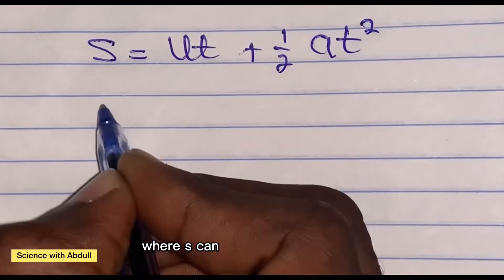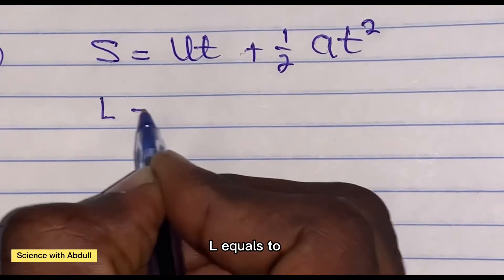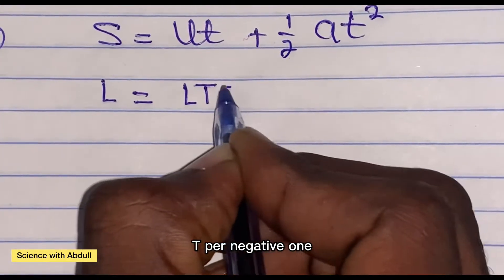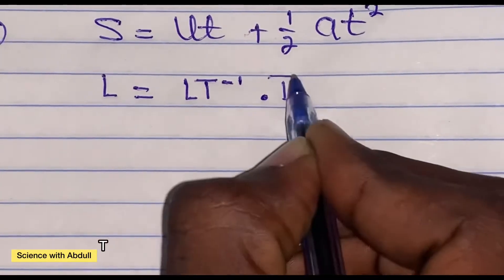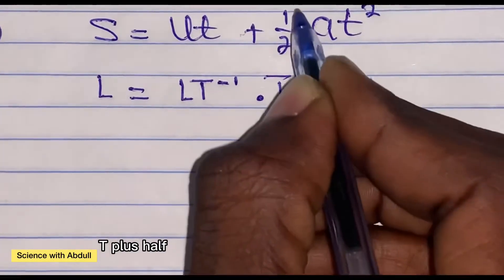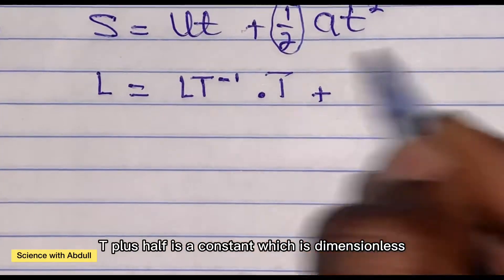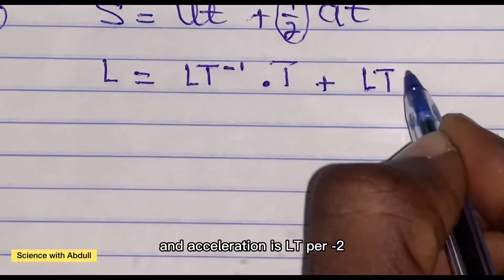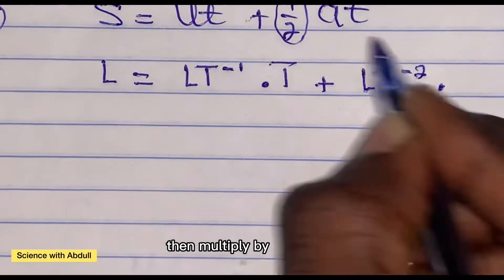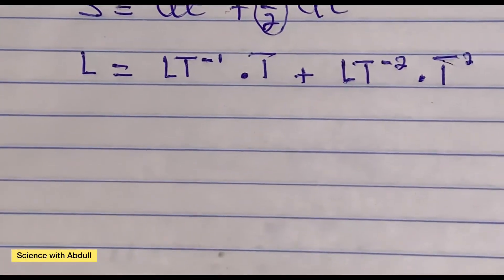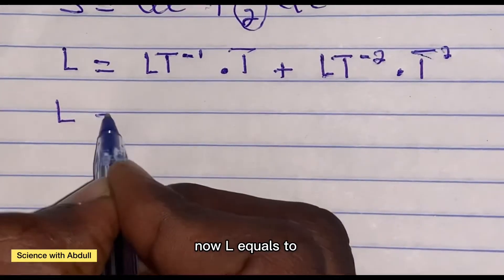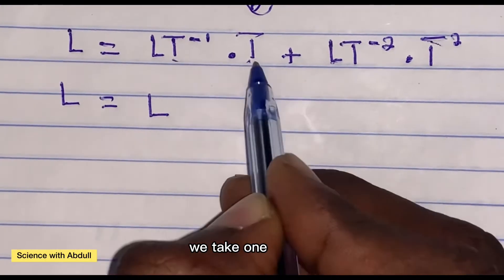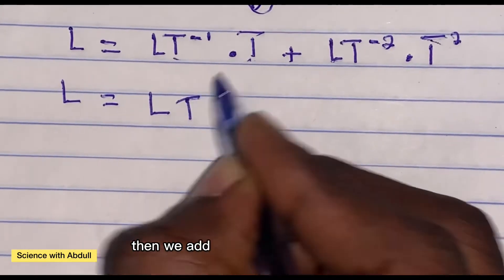The third formula is s equals u t plus one-half a t squared, where s is denoted as capital L. The initial velocity u is L T to the power of negative 1, multiplied by T. One-half is a dimensionless constant which we neglect, and acceleration is L T to the power of negative 2, multiplied by T squared. From the index law, we take one base T and add the powers.